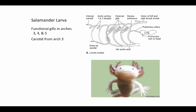Now let's look at another vertebrate that uses both lung breathing and gill breathing: the salamander larva. As usual, the first arch is gone. During embryonic development, the second arch also deteriorates in amphibians, so now the carotid arteries — both internal and external — branch from the third arch. The third, fourth, and fifth arches still bear gills, so we have functional gills in arches three, four, and five.